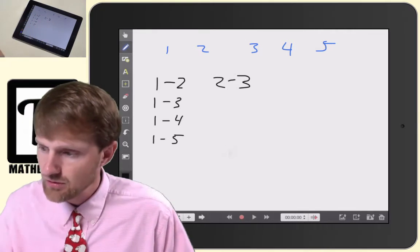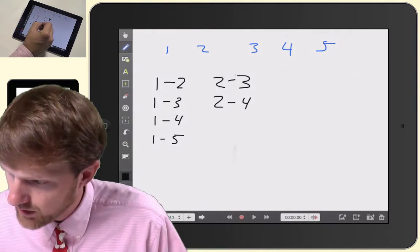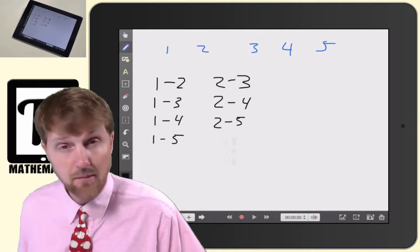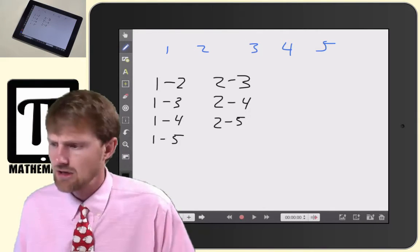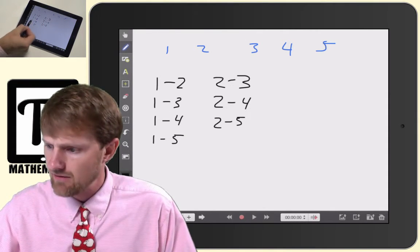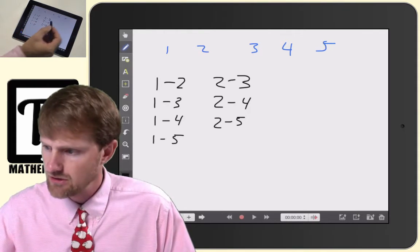But we have two with three, and then two's going to shake hands with four, and then two's going to shake hands with five. Remember, I wanted an organized list. So my organized list is, I have one, all the shakes with one, all the shakes with two.